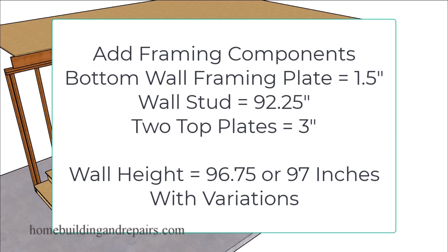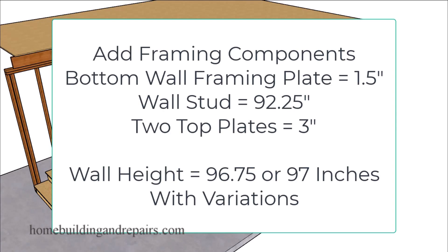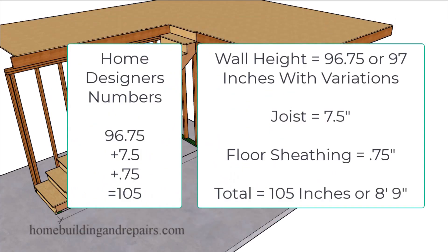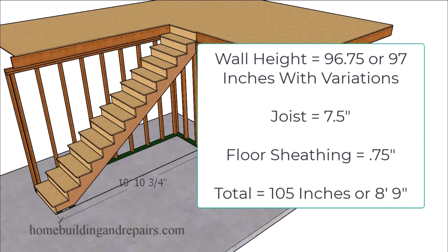Then add our wall framing stud height of 92.25 inches to get a wall height of 96.75 inches. Then we increase the wall height by a quarter of an inch because of variations in lumber sizes and gaps between framing components. Our joists are 7.5 inches and floor sheathing is 0.75 inches. Adding those to the 97 inches gives us 105 inches, or 8 feet 9 inches.